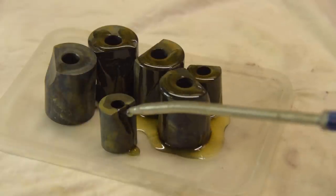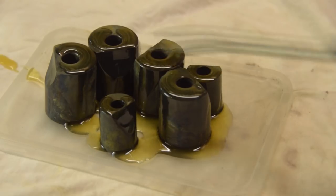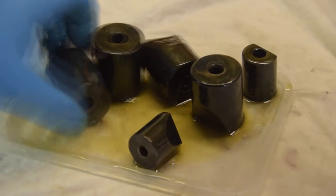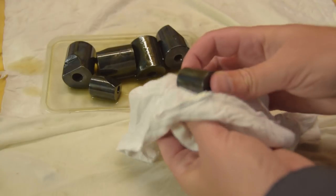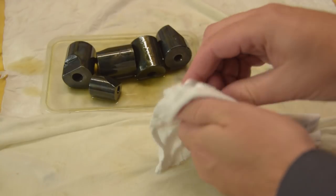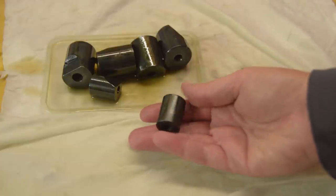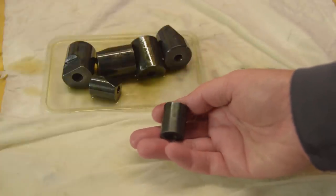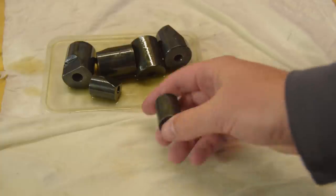At this point the surface looks horrible and patchy but don't panic. Once the parts are oiled and wiped down the finish looks much better. Maybe not as good as properly refinishing them with black oxide but they'll look great when they're back on the machine.